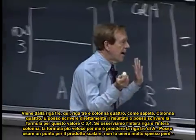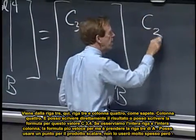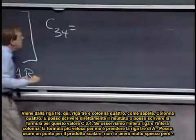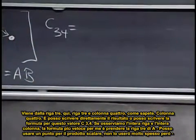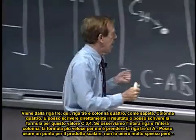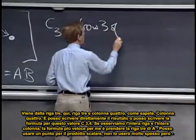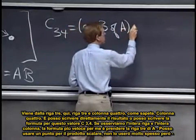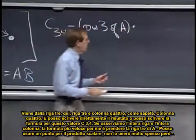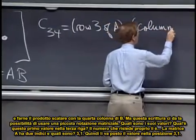And can I just write down the formula for it? C three, four is, if we look at the whole row and the whole column, the quick way for me to say it is row three of A, I could use a dot for dot product, I won't often use that actually, dot column four of B.